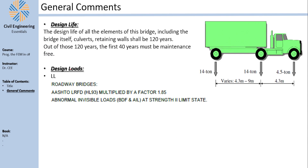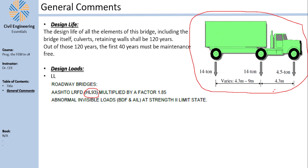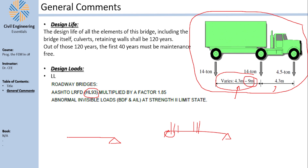For the live load, we are going to use the HL93 truck, which is defined in the AASHTO code. You have specific weights under the axles — one constant axle and one variable axle. You vary the axle spacing to produce maximum loads and moments. For a single span bridge you typically choose the smallest spacing to produce maximum moment and shear, while for a continuous bridge you use maximum spacing to produce maximum negative moment.